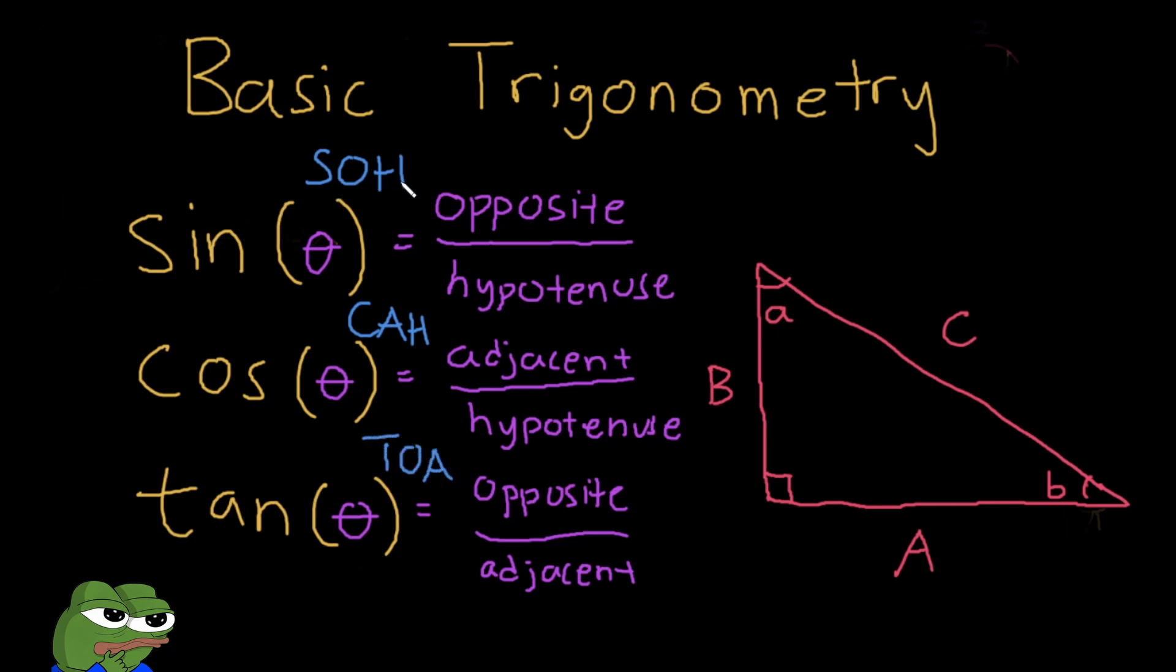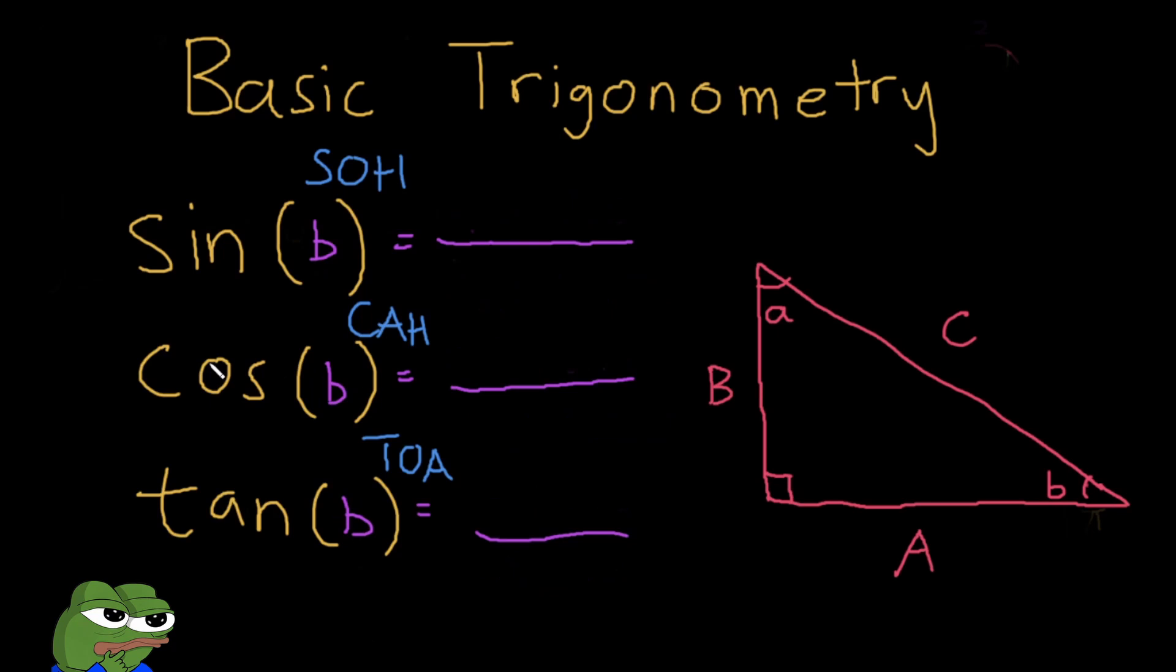So sine: opposite over hypotenuse, cosine: adjacent over hypotenuse, and tangent: opposite over adjacent. Just as an exercise, given this right triangle over here, I want us to fill out the sine, cosine, and tangent of angle B. Let's begin. For sine, that's opposite over hypotenuse.